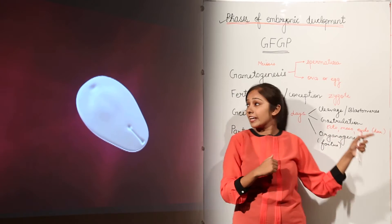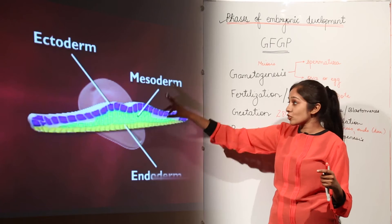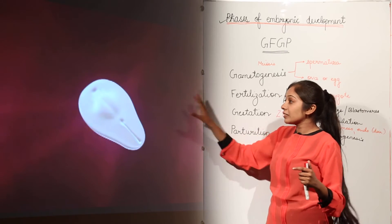Ectoderm, mesoderm and endoderm. So now this is going to lead to the formation of three germ layers: ectoderm, outer one; mesoderm, major one; and endoderm, inner one. So these three germ layers are formed.